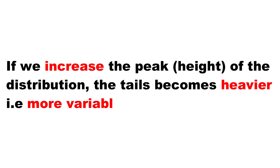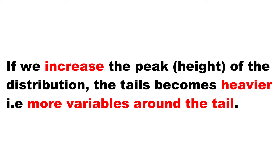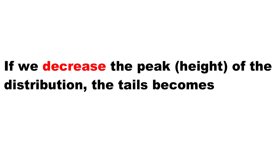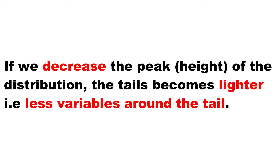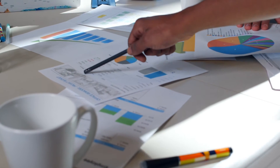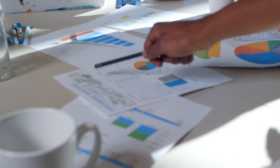One thing we need to understand is that if we increase the peak — that is, if we increase the height of the distribution — then the tails of the distribution tend to be heavier. And if we reduce the height or the peak of the distribution, then the tails of the distribution tend to be lighter. I will be using a Desmos calculator to visually represent this point.